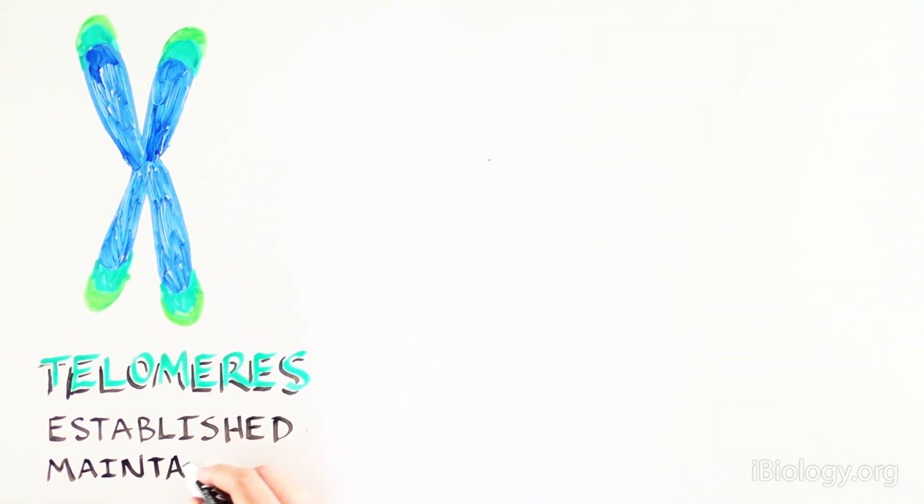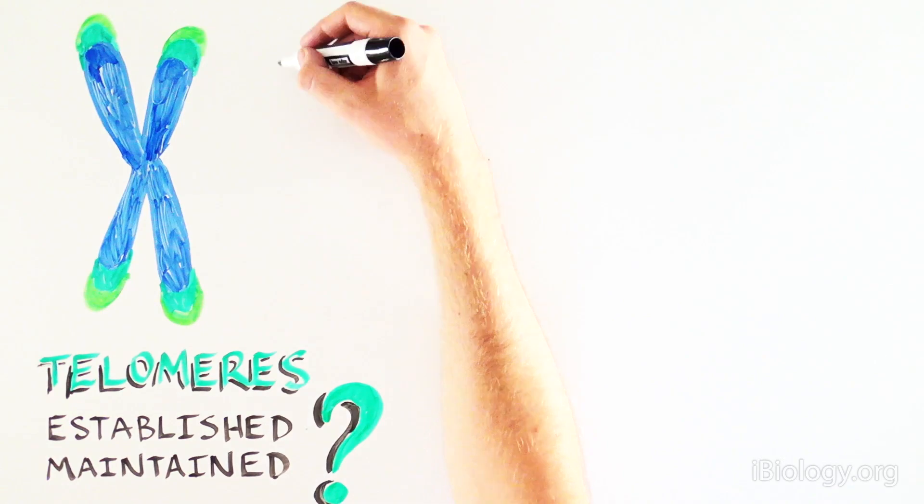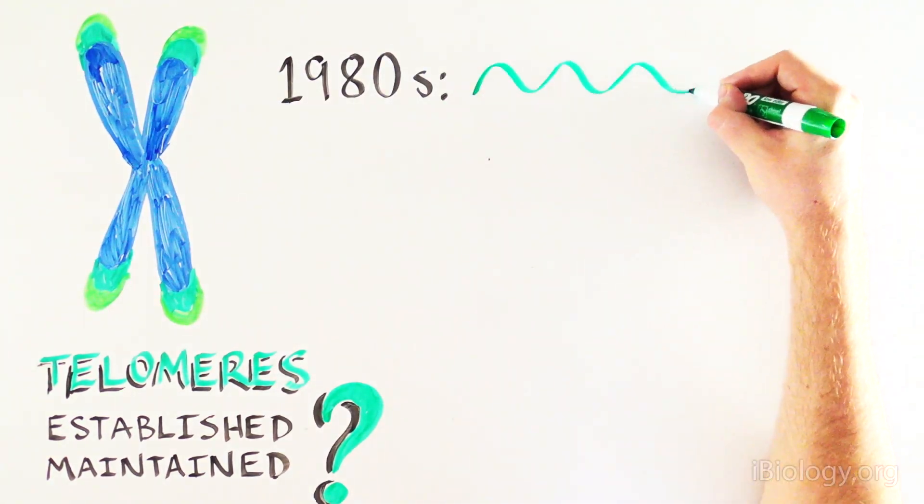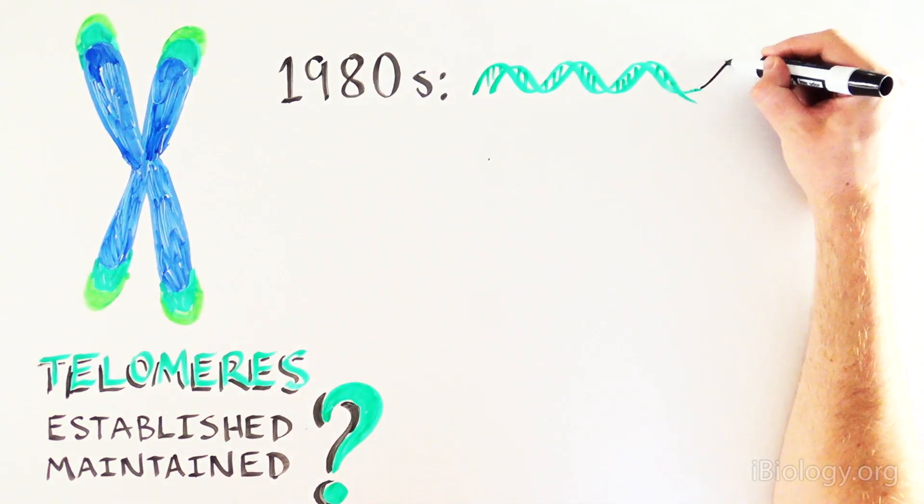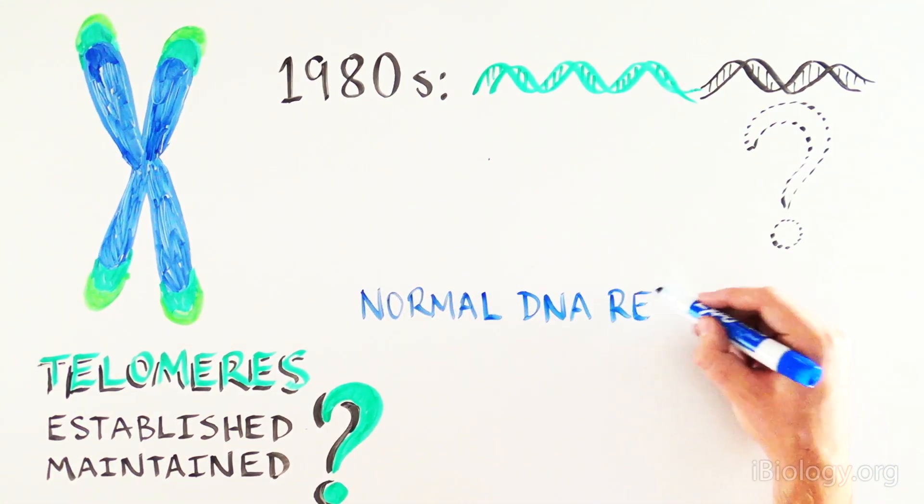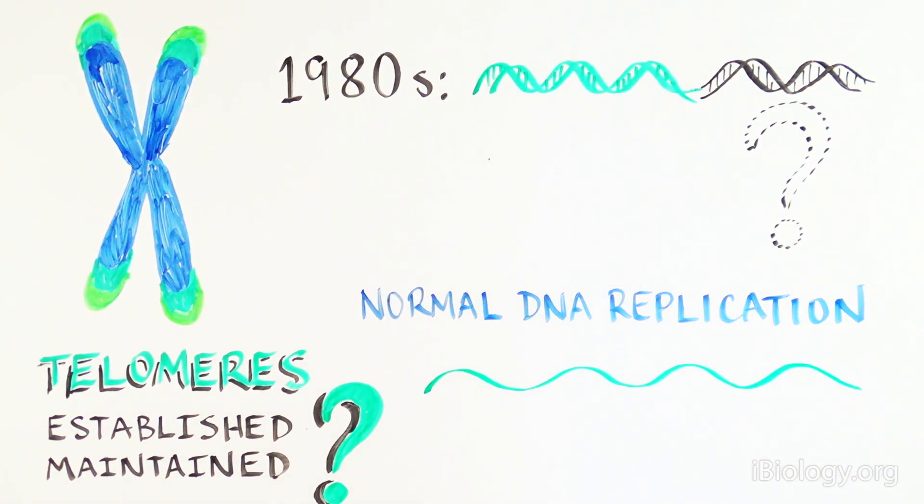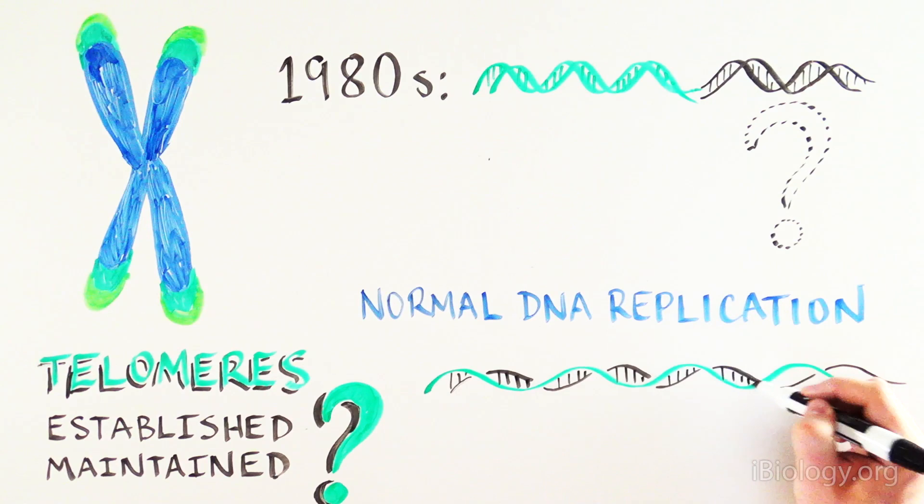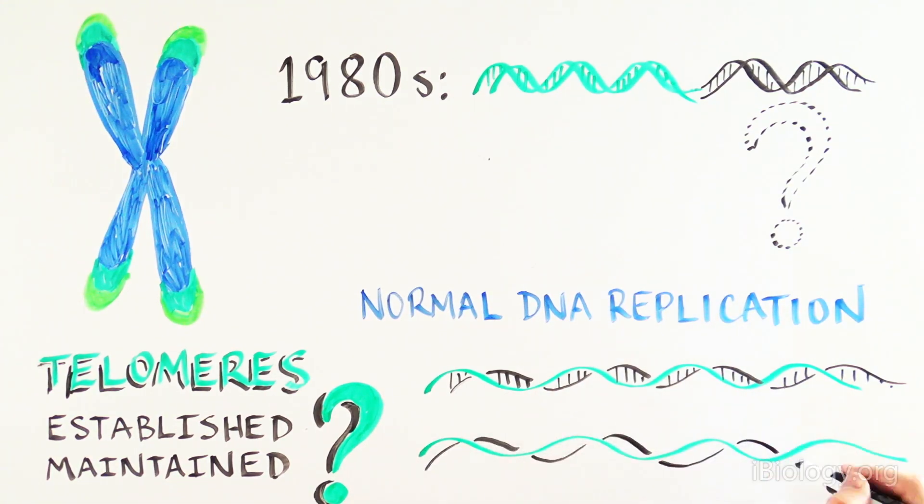So how does the telomere get established and maintained? This question puzzled scientists in the 1980s because nothing we knew about biology could explain how DNA could get added onto the end of another piece of DNA. Normal DNA replication by DNA polymerase requires a DNA template, so it can't add anything to the ends of chromosomes where there is no template.